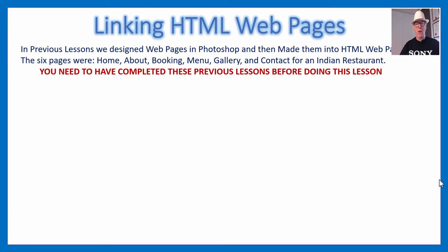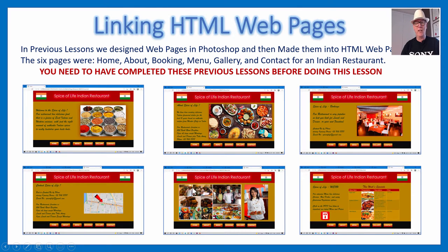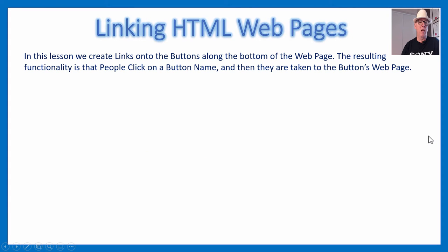We originally made the design in Photoshop, saved them as JPEGs. Then in the next lesson we took those JPEGs and used Dreamweaver to make HTML pages. You need to have done that lesson. You'll then have the pages for our Indian restaurant website running inside Google Chrome. You need to have all six pages running. If you haven't done that, you'll have to go back and do it — it's not supplied in the downloads.